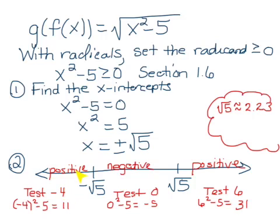So we need to pick a value smaller than negative square root of 5, so smaller than a negative 2.23. We need to pick a value in between negative square root of 5 and positive square root of 5, so we can pick 0. And we need to pick a value larger than square root of 5, so we're going to pick 6.